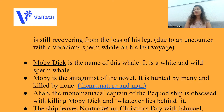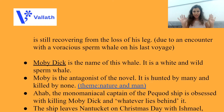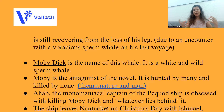Now let's talk about Ahab — the monomaniacal captain of the Pequod ship, obsessed with killing Moby Dick and whatever lies behind it. Monomaniacal means being obsessed with one thing, having your mind preoccupied with one thought. So Ahab has preoccupied his mind with Moby Dick: 'I will kill this whale.' That is how Ahab is always thinking, always acting devilish, because he has lost his leg due to Moby Dick.